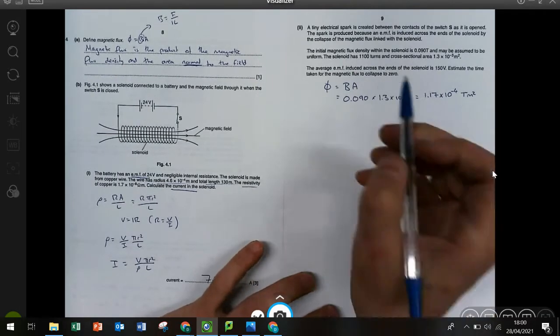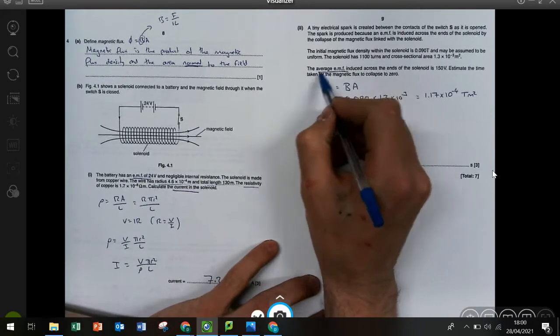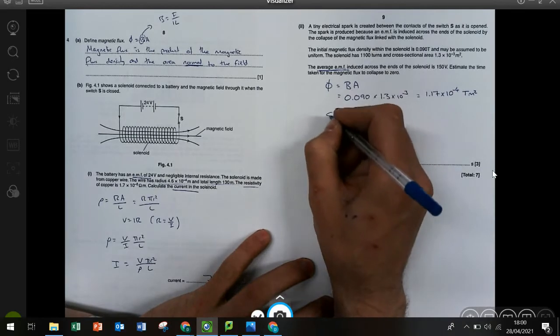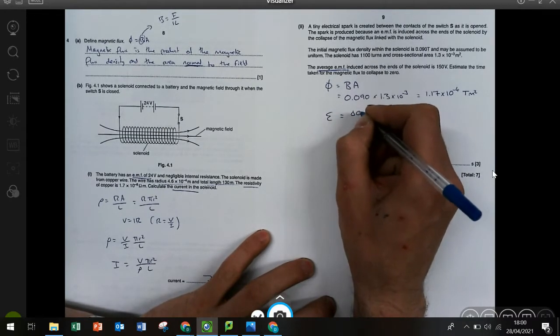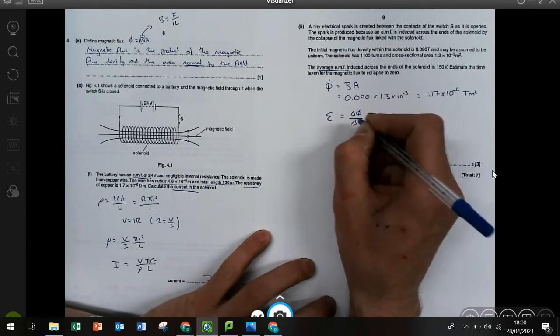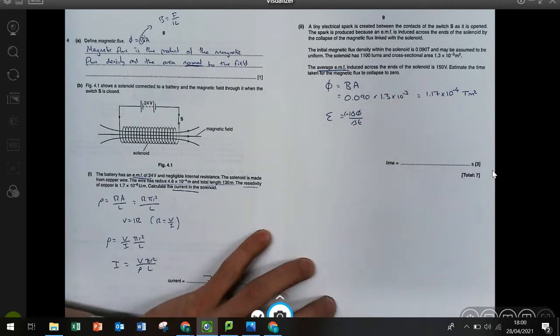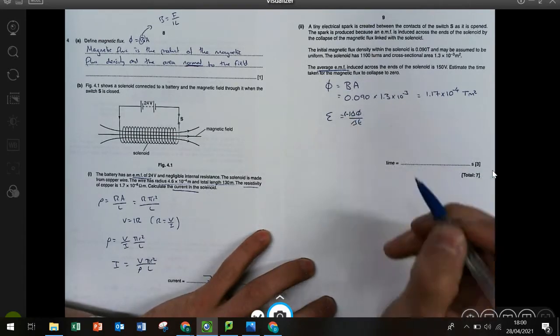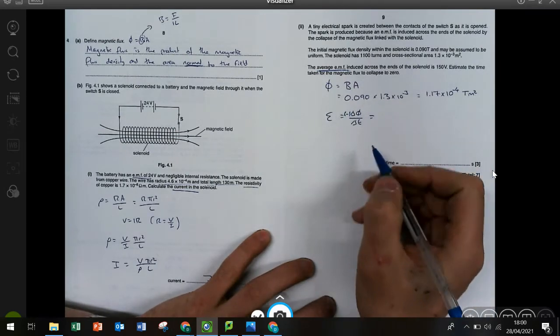And then we need to know how long it takes to collapse to zero. And they've given us the average EMF. So this should bring to mind the really fundamental relationship where induced EMF is change in phi over change in T, or technically negative, because it's induced in the opposite direction, which is what Lenz's law tells us, although that isn't actually needed here. So we can then use this to find time.